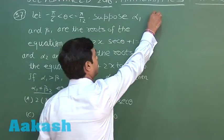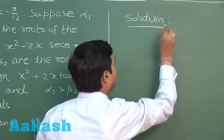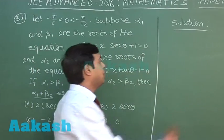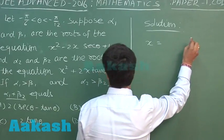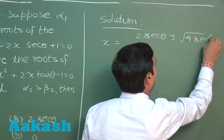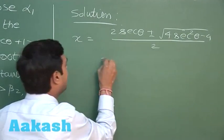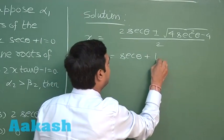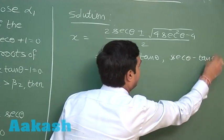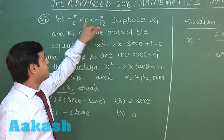Two equations are given. The first one, x² minus 2x·secθ plus 1 equals 0. We find the roots using the quadratic formula: (2·secθ ± √(4·sec²θ − 4)) / 2, giving us secθ + tanθ and secθ − tanθ.